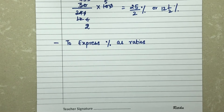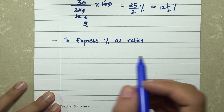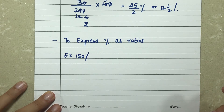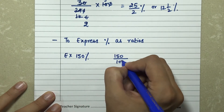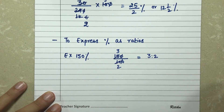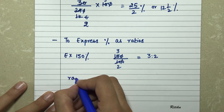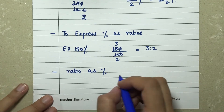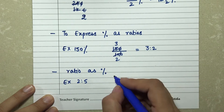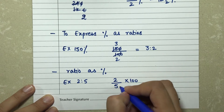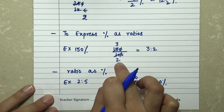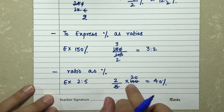Next, we express percentages as ratios and ratios as percentages. To express 150% as a ratio: 150/100 simplifies to 3:2. To convert a ratio to a percentage — for example, 2:5 — we do 2/5 × 100 = 40%. The rule is: to represent anything in percentage form, divide by 100; to represent anything as a percentage, multiply by 100.